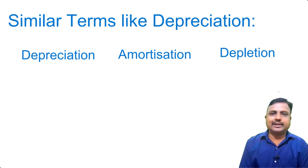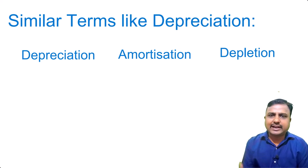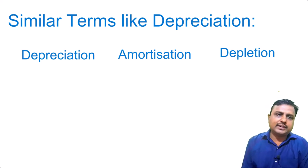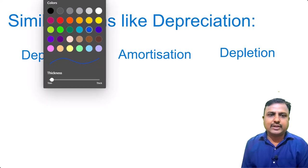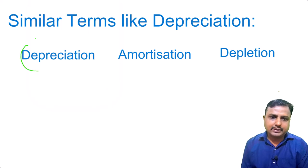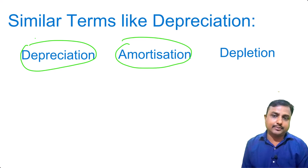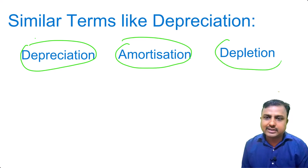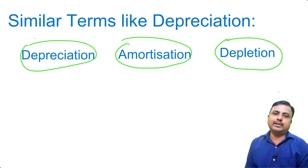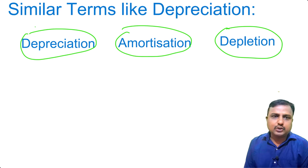Let's see similar terms to depreciation: depreciation, amortization, and depletion. These three words have similar meaning — all refer to a reduction in value. Depreciation means a reduction in value, amortization also means a reduction in value, and depletion also means a reduction in value. But what is the difference between the three?